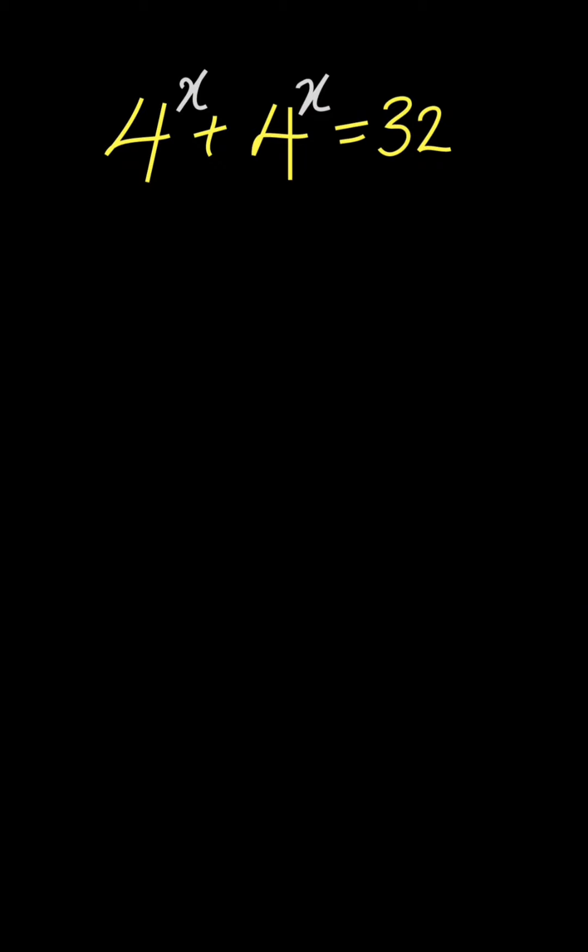And you ask yourself, 4 power x is 2 times at the left hand side. So you can call it 2 multiplied by 4 power x because it is double. 2 multiplied by 4 power x.